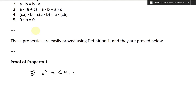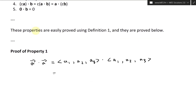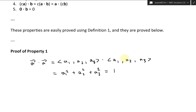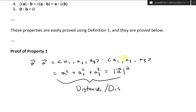We have A dot A, and we'll do this in three dimensions. This equals A1, A2, A3 dot A1, A2, A3 — it's dotted with itself. Applying the definition of the dot product, this equals A1 squared plus A2 squared plus A3 squared. And this is just the length formula — the components of a vector squared — so this equals the magnitude of vector A squared, by the Pythagorean theorem, the distance formula in three dimensions.